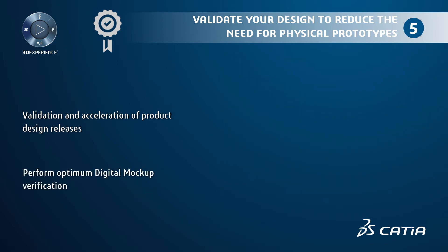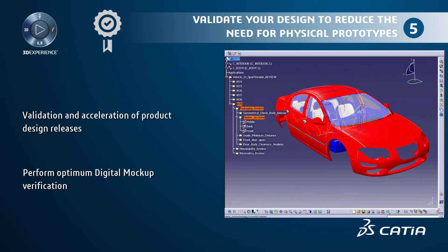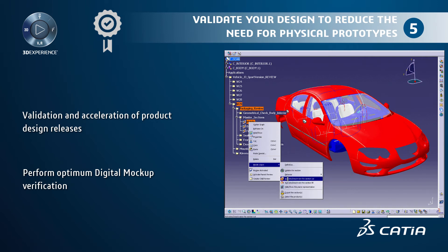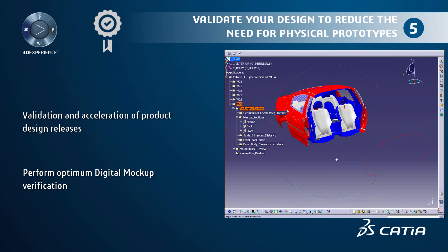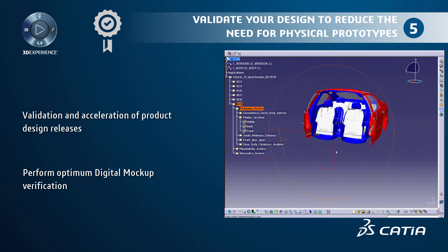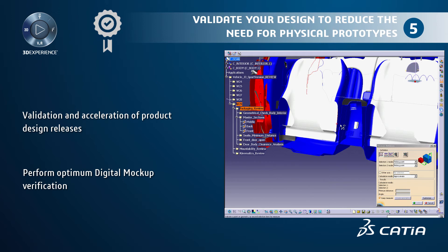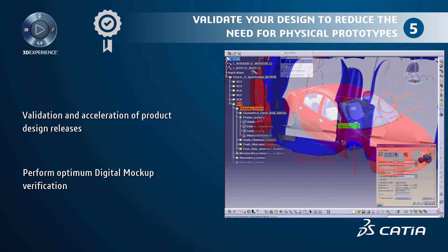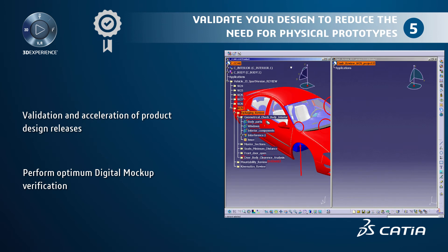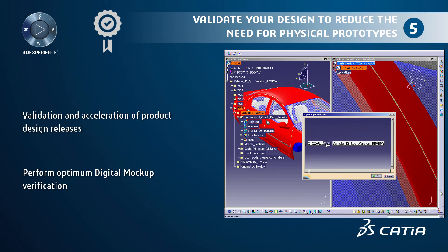How do you perform optimum digital mockup verifications? Digital mockup space analysis allows advanced validation of designs by ensuring a better understanding of problems for quick solving. You can perform optimum verification using advanced interference detection and analysis, superior sectioning analysis, measurement, distances analysis, and 3D geometry comparison tools. Interferences can be detected interactively or in batch mode, analyzed, and results can be saved. Digital mockup space analysis is capable of handling mockups of all sizes, from consumer goods to very large automotive, aerospace, plant, ships, or heavy machinery mockups.